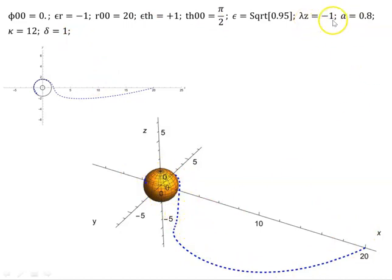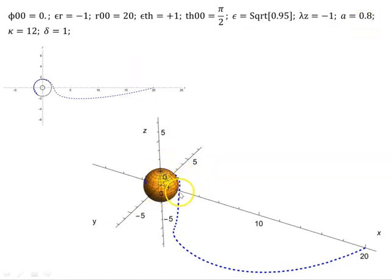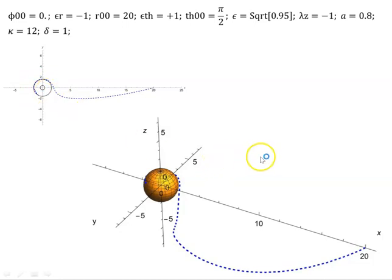Even though the particle has negative angular momentum and wants to rotate clockwise, as it approaches the stationary limit surface — which is at exactly two units for A equals 0.8 — it has to rotate with the black hole. The black hole in all these cases has A equals plus 0.8, rotating counterclockwise. As the particle gets closer, there's a point where it just can't rotate against the rotation of the black hole, so it must go with it. You can see it here: it wants to go down the page but it can't — the rotation of the black hole draws it around.